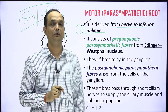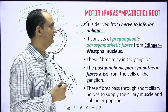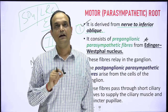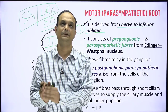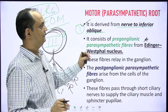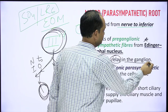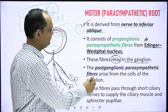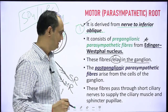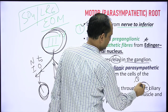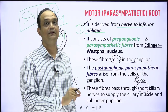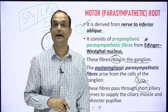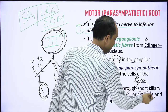The motor root carries pre-ganglionic fibers whose source is the Edinger-Westphal nucleus, a collection of neurons in the midbrain considered the pre-ganglionic parasympathetic nuclei for the oculomotor nerve. Fibers from the Edinger-Westphal nucleus relay in the ciliary ganglia, and from here post-ganglionic fibers arise after synapse. These post-ganglionic fibers pass through the short ciliary nerve. A key exam point: the connection between the ciliary ganglia and the eyeball is the short ciliary nerve.